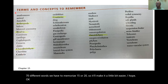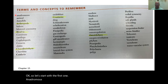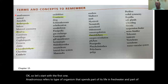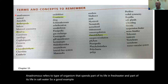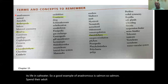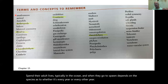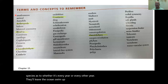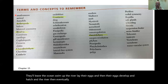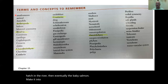Let's start with the first term: anadromous. Anadromous refers to an organism that spends part of its life in fresh water and part in salt water. A good example is salmon. Salmon spend their adult lives in the ocean, and when they go to spawn, they leave the ocean, swim up the river, lay their eggs, and the eggs hatch in the river. Eventually the baby salmon make it into the ocean.